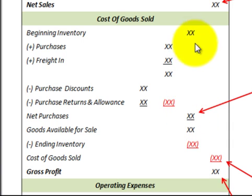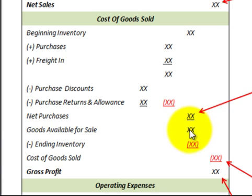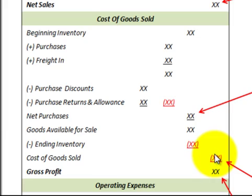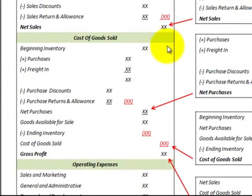We add those net purchases to the beginning inventory to come up with goods available for sale — that's the total goods we have available. Then we subtract out our ending inventory, and by subtracting that from goods available for sale we get cost of goods sold. Knowing the cost of goods sold, we subtract it from net sales to get the gross profit.